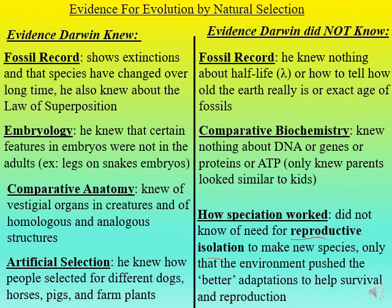Darwin made the key insight that nature pushes for adaptations to help creatures survive and reproduce, drawing from his studies of artificial selection — how people selected for different traits in dogs, horses, pigs, and farm crops — and applying that logic back to nature.